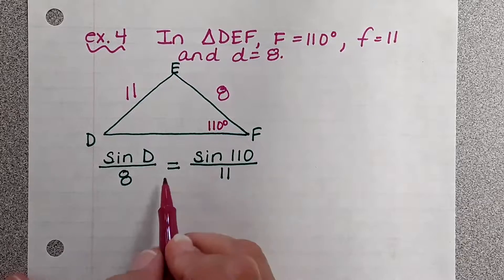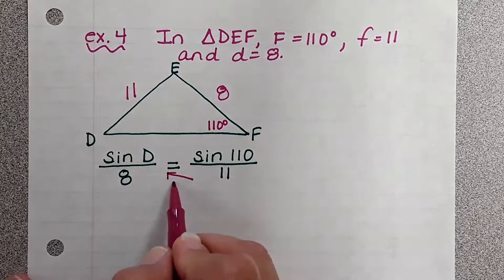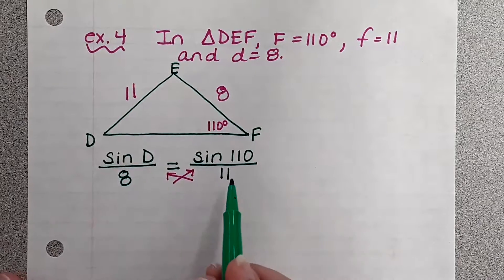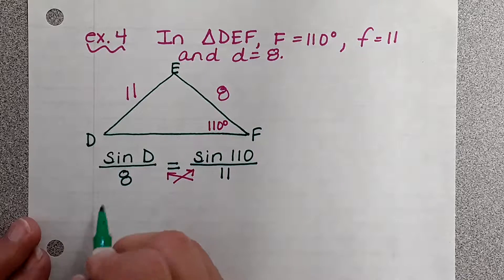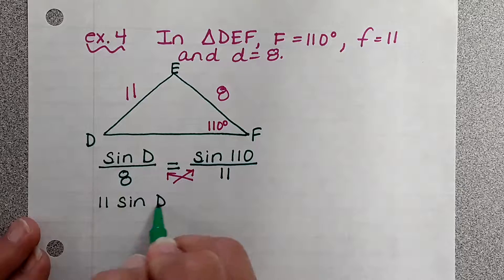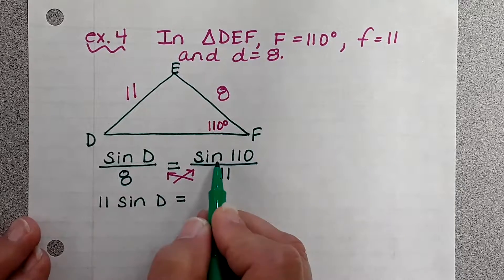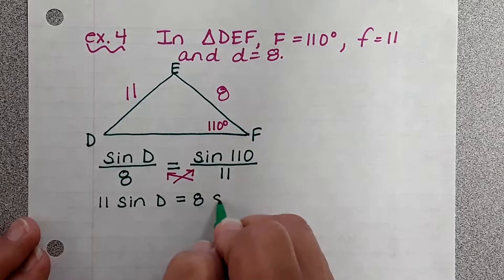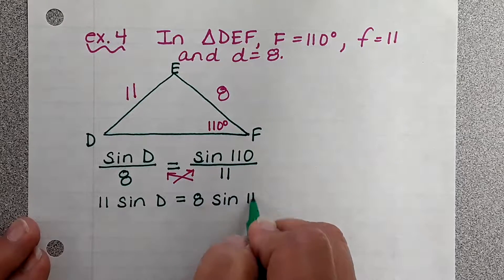Then what you do is you're going to cross multiply. Eleven times sine of D is 11 sine D. Eight times sine of 110 is eight sine 110.